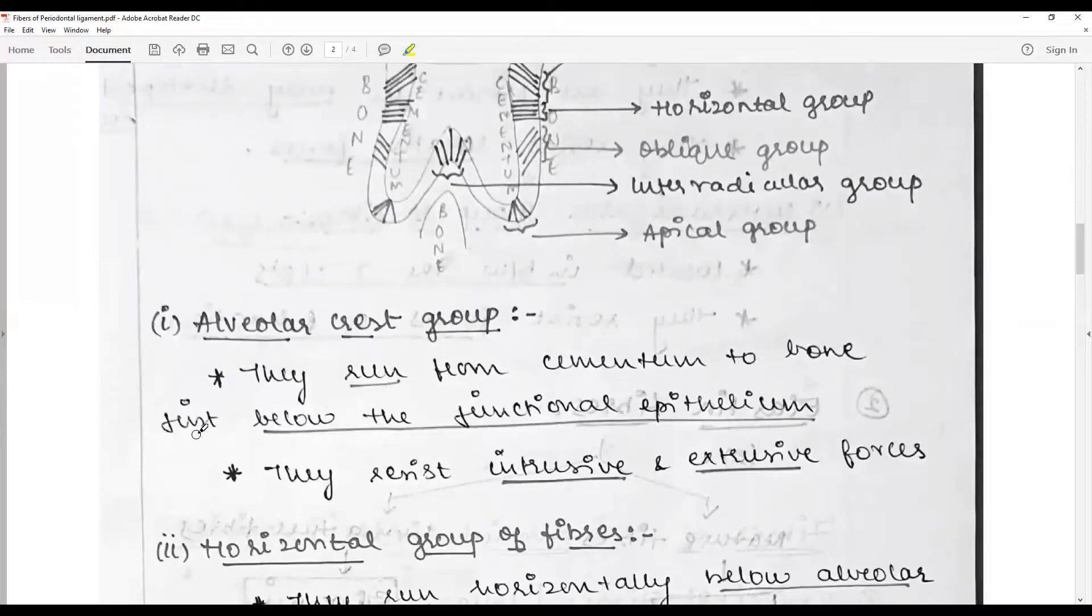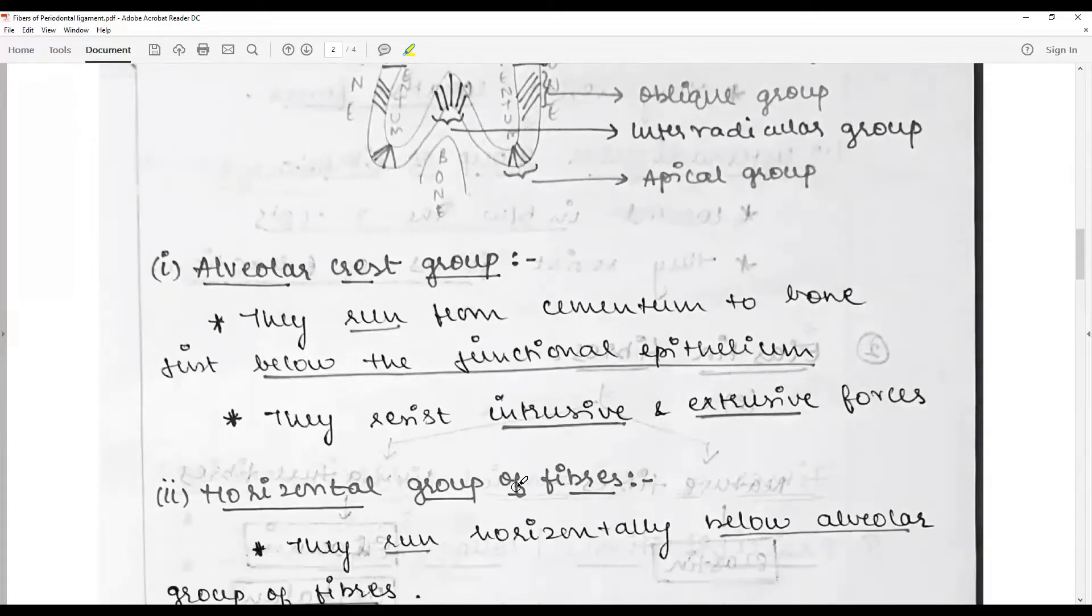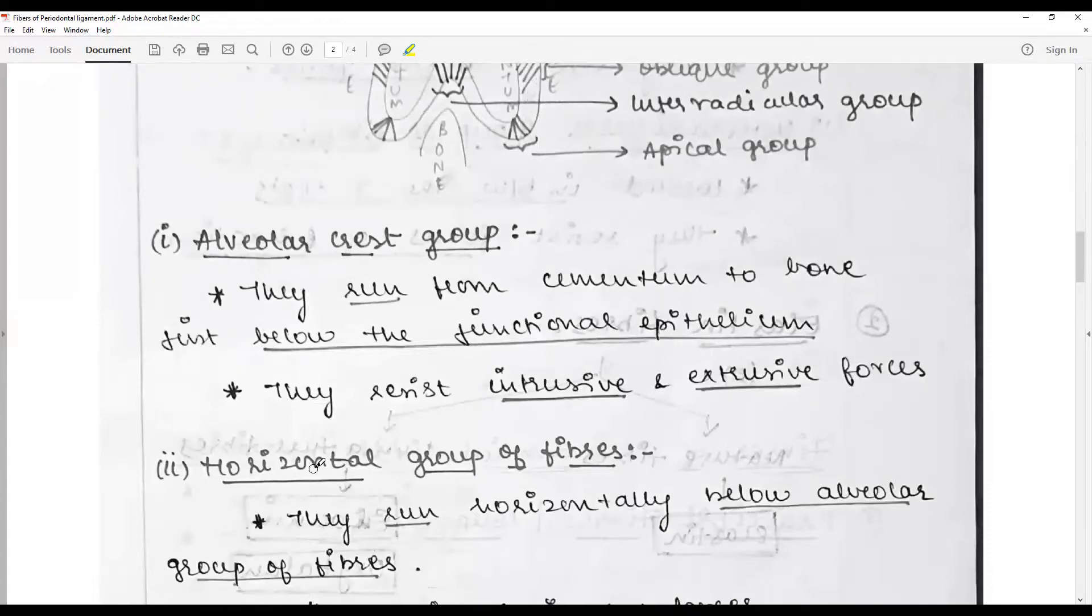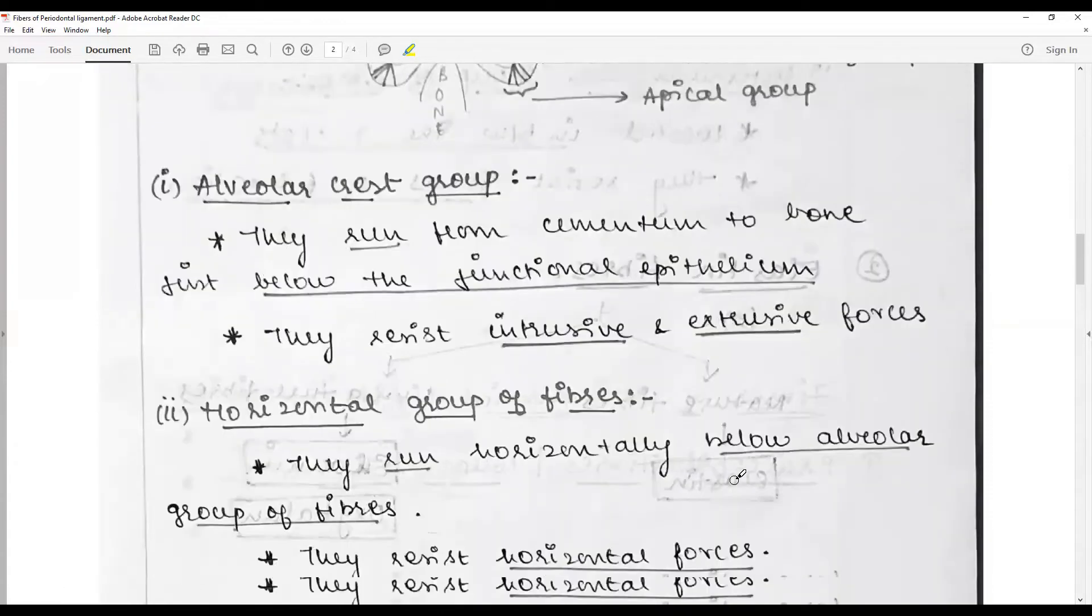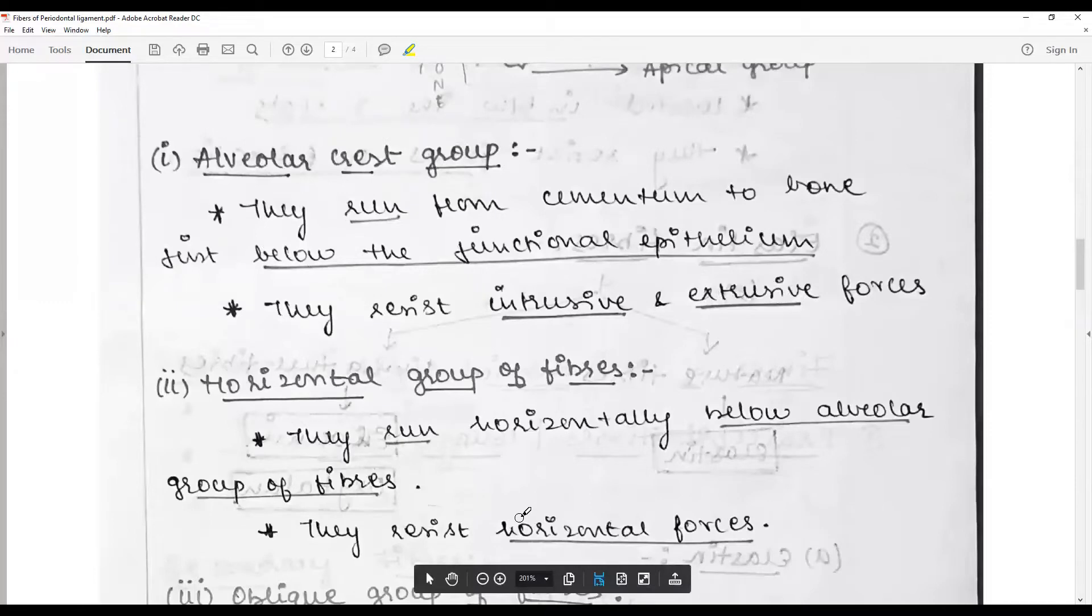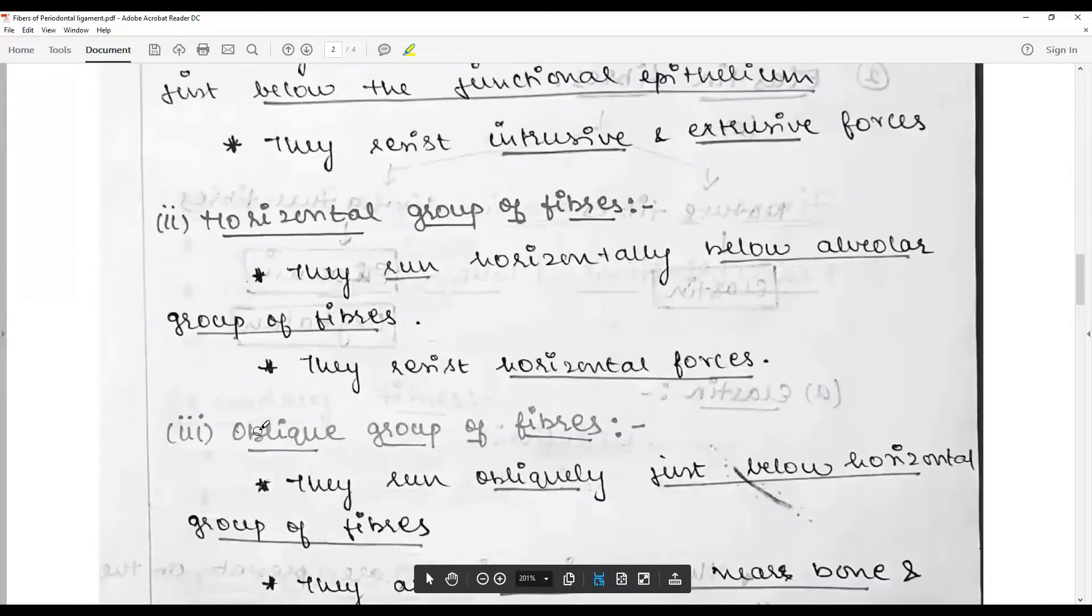Alveolar crest group runs from cementum to bone just below the junctional epithelium and resists intrusive and extrusive forces. Horizontal fibers run horizontally below the alveolar group of fibers and resist horizontal forces.